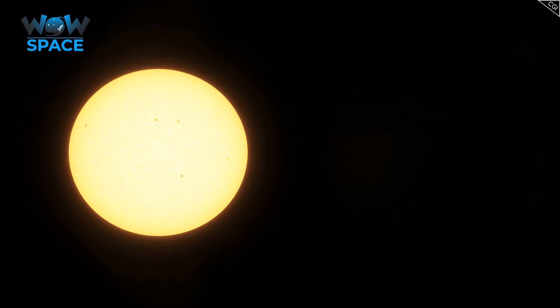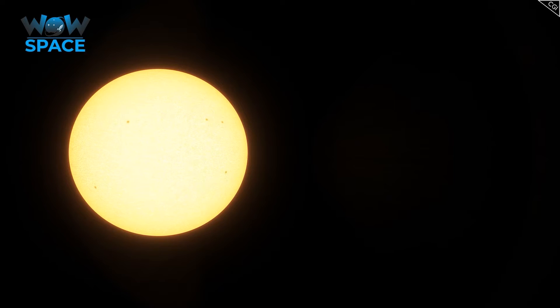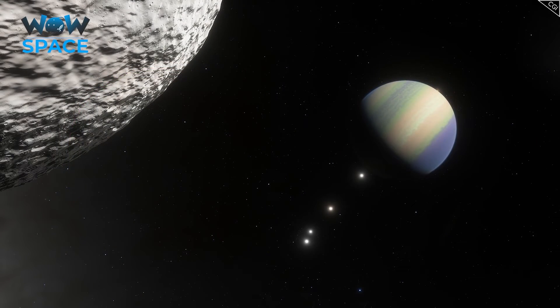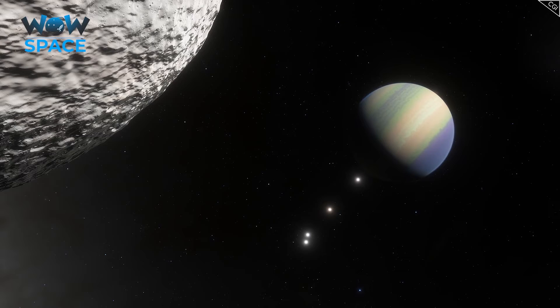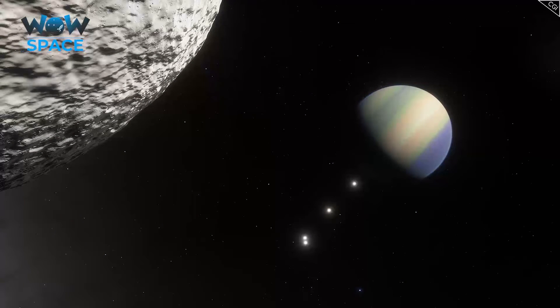Some of the smallest stars out there have a radius of roughly 70,000 kilometres. Some of the biggest planets out there can be double or triple that. Which leads on to the final question I wanted to cover here.